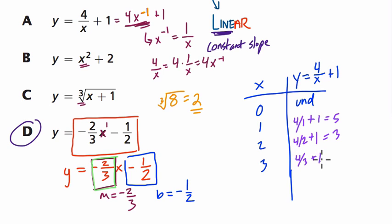And I plug in three. Four divided by three plus one is, well, four thirds plus one is four thirds plus three thirds, or seven thirds. And that's equal to two and a third. And what we're looking for is a constant rate of change, constant slope. And here we can see we don't have it.